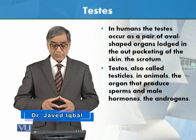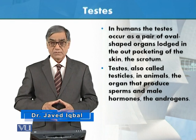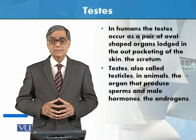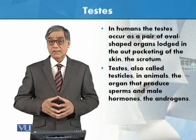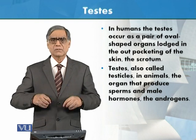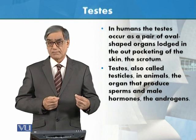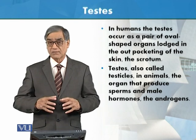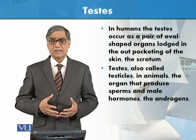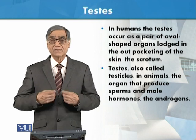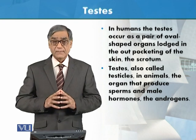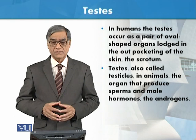The testes are the organs that produce sperms and male hormones, which are the androgens. The testes have two important roles: one is sperm production. Sperms are the reproductive cells that carry genetic information for the next generation. These reproductive cells unite with egg cells to form a zygote and carry out the process of fertilization. This is how the next generation starts, which is why sperms are very important for the continuity of the species.